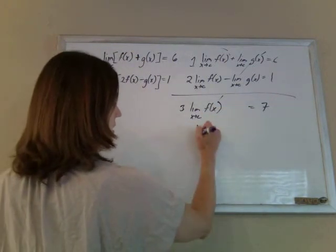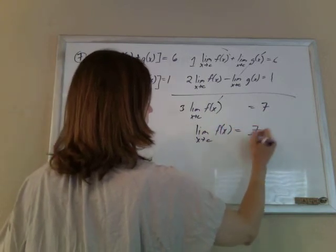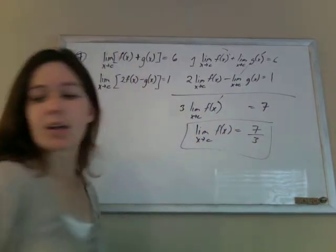So the limit of f(x) is just going to be 7 divided by 3. That should be my answer.